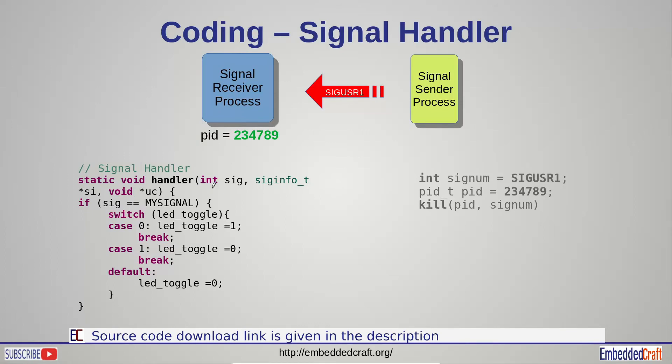Let us review our signal handler. Signal handler will be called when the signal is received by process. Signal number will be seen in SIG variable. We are saying that when SIG is equal to my signal, then we want to toggle LED. If LED toggle variable is 0, we will make it 1. And if LED toggle variable is 1, we will make it 0. Based on LED toggle variable, we will toggle LED.